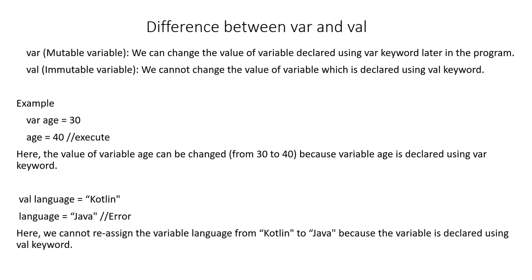First, we'll talk about the var keyword, which is a mutable variable. So var is a mutable variable, which means we can change the value of a variable declared using the var keyword later in our program. Whenever we create a variable using var, that variable's value can be changed at a later stage. For example, we create a variable h with a value of 0, and later we reassign it a value of 20 — that is possible because var is a mutable variable.